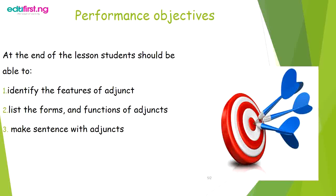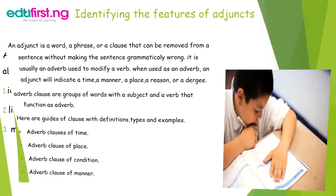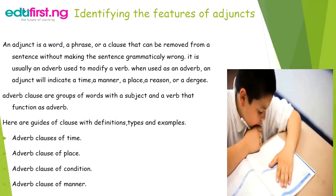Identifying the features of adjunct: an adjunct is a word, a phrase, or a clause that can be removed from a sentence without making the sentence grammatically wrong. It is usually an adverb used to modify a verb. When used as an adverb, an adjunct will indicate a time, a manner, a place, a reason, or a degree.